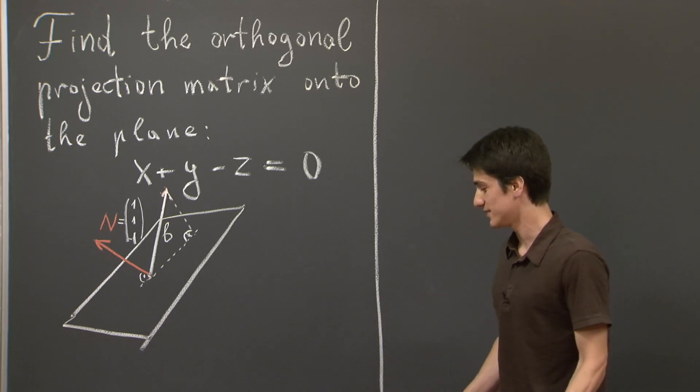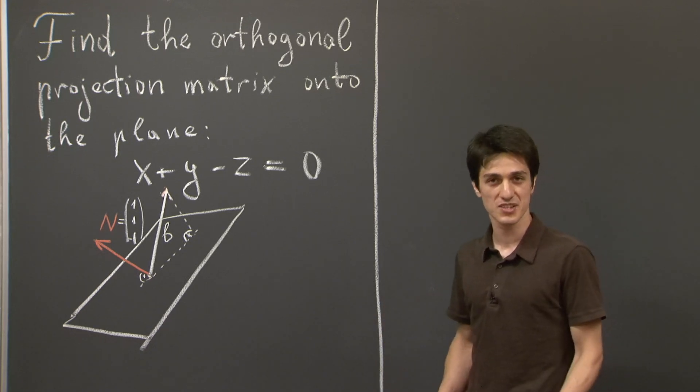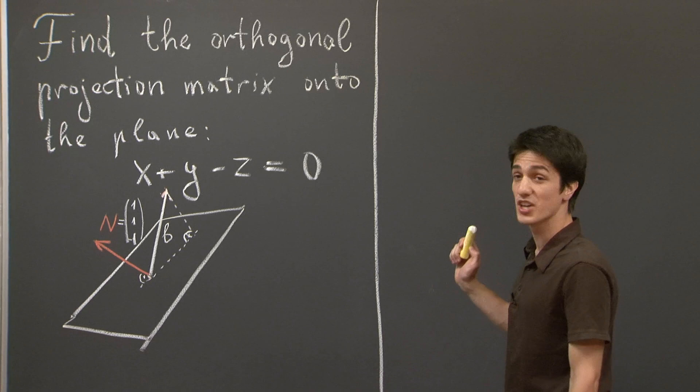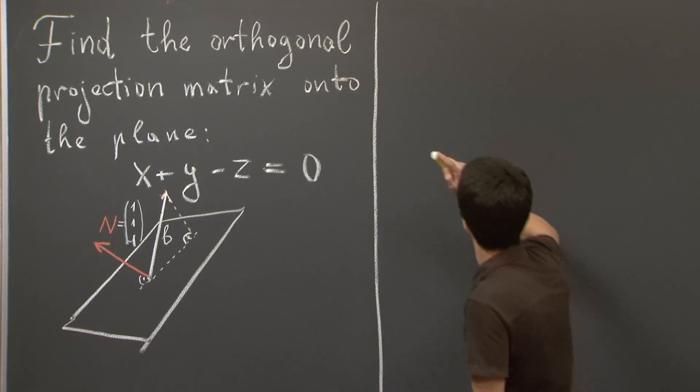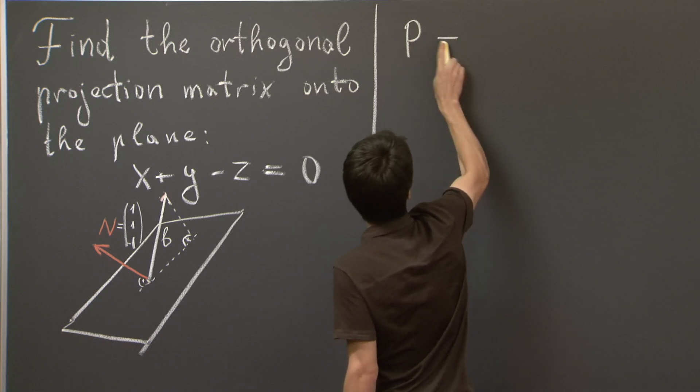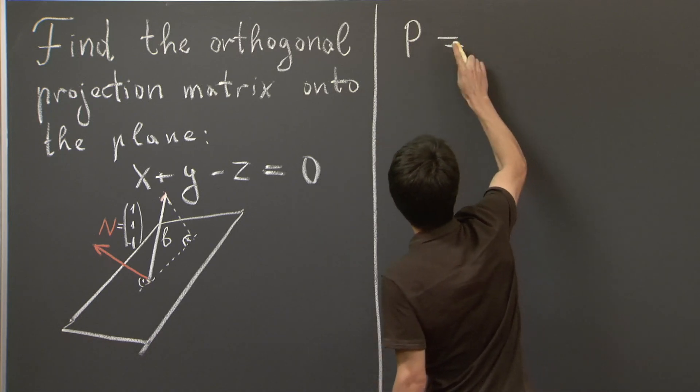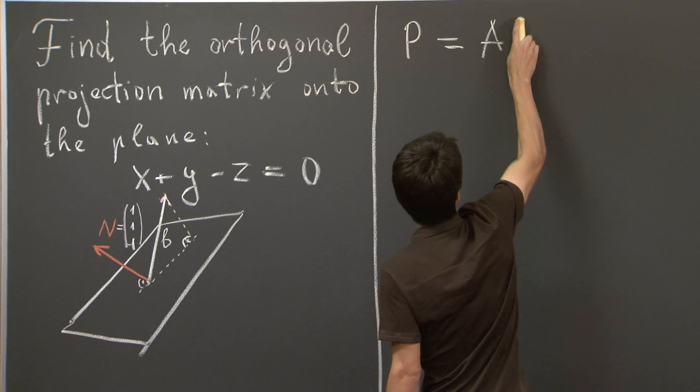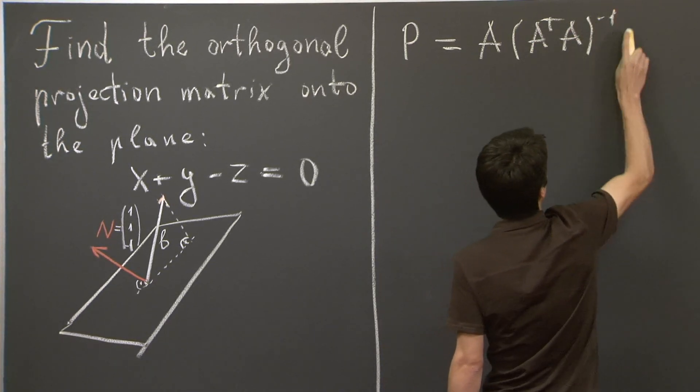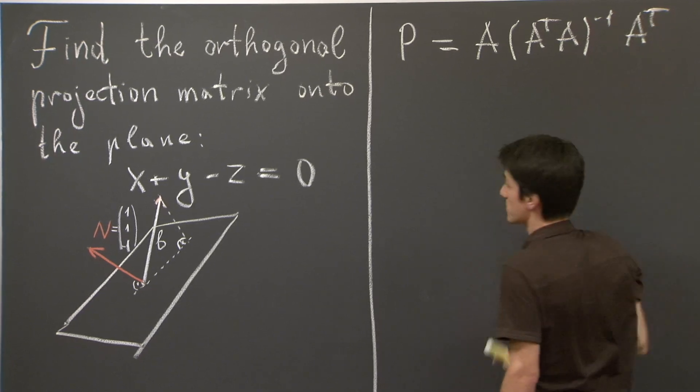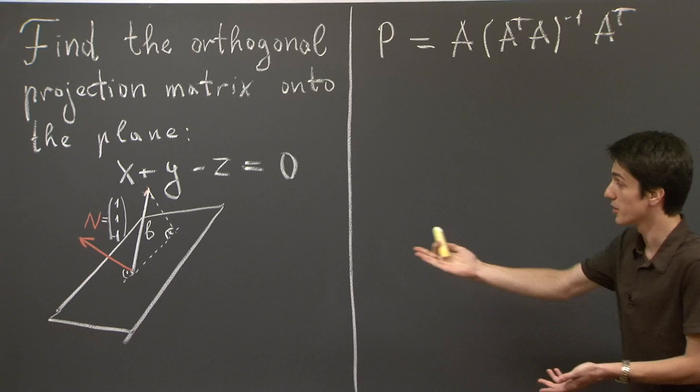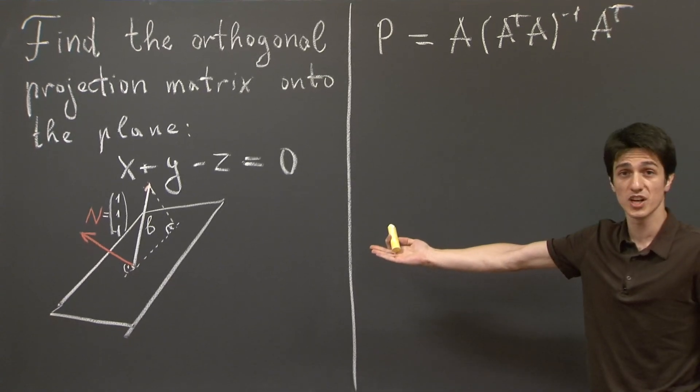OK. So in lecture, Professor Strang derived in meticulous detail the formula for the projection matrix. So it was given by the following, slightly complicated expression. It's A times A transpose A inverse A transpose, where A is a matrix that somehow encodes the subspace we are projecting on.